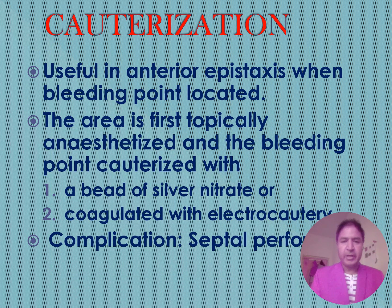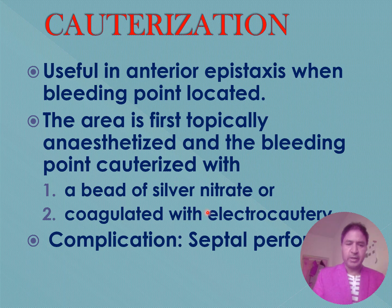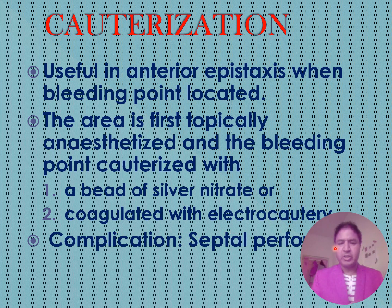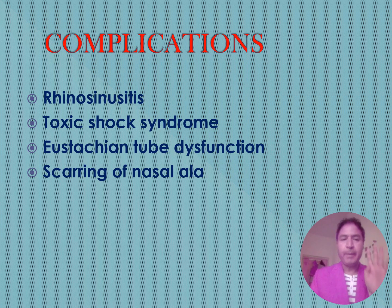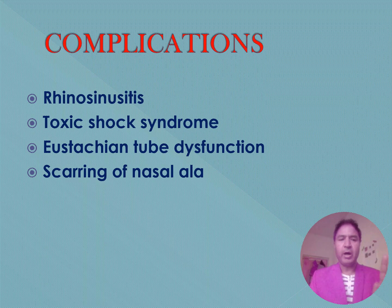Cauterization is useful in anterior epistaxis when the bleeding point is located. The area is first topically anesthetized and the bleeding point is cauterized with silver nitrate or coagulated with electrocautery. Complications of anterior nasal packing include rhinosinusitis, toxic shock syndrome, Eustachian tube dysfunction, and scarring of the nasal ala — remembered as R-T-E-S.